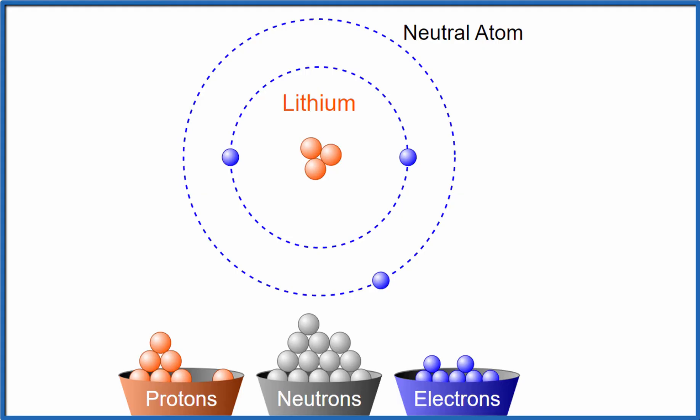But when lithium loses an electron, because it's in group 1, it loses an electron, it becomes an ion. It has a positive charge. And often it'll lose that electron when it forms a chemical bond. It'll transfer it to another atom.